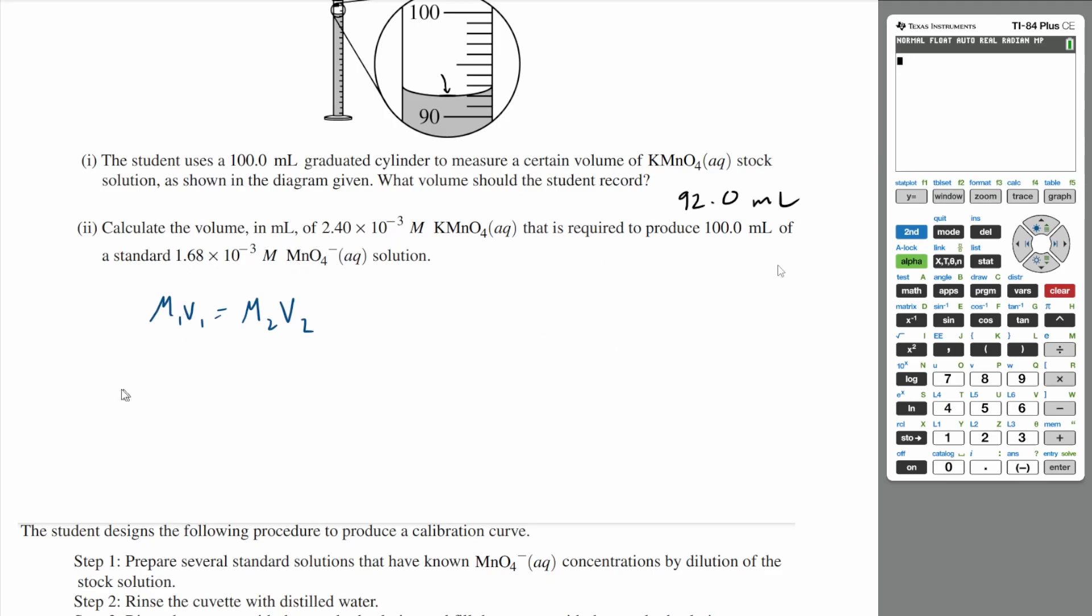So we know our concentration of potassium permanganate is 2.40 times 10 to the negative 3 molar. And you want to find V1. Our M2 is 1.68 times 10 to the negative 3 molar and our volume is 0.1 liters.